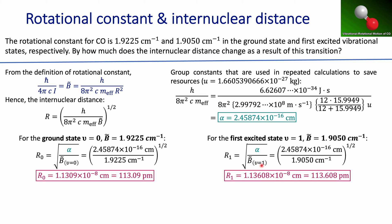I'm going to do the same type of calculation using the same value of alpha, but now changing the rotational constant to the one corresponding to the first excited vibrational state. When I substitute all the values, the internuclear distance for that state is 113.61 picometers.